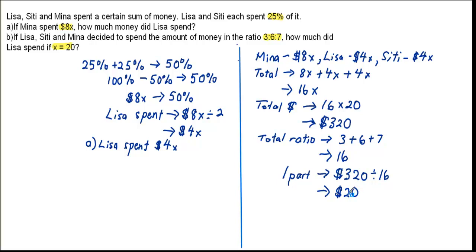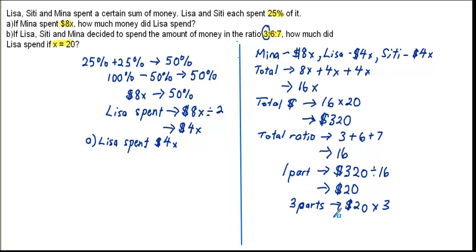Looking at the question, it is asking for the amount of money that Lisa spent. Based on the ratio 3:6:7, Lisa's part is 3. So 3 parts equals 20 times 3, which gives us 60 dollars. The answer for Part B is: Lisa spent 60 dollars.